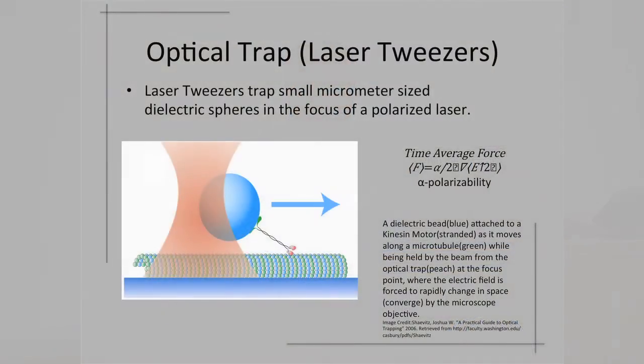So what is an optical trap? Optical traps or laser tweezers trap small micrometer-sized dielectric spheres in the focus of a polarized laser. I know that's a mouthful, and for everyone here I put an equation because I know most people love physics. So what this really means is most plastics are materials known as dielectrics, and when you put a dielectric in an electric field it will feel a force. If you have one that varies rapidly in space it will feel a force towards the area where it varies most in space. Electric fields, laser beams and light in general can be characterized as a large electric field. So all you have to do is focus a laser beam and you have your electric field that varies greatly in space. Therefore the bead or the dielectric will get pulled towards the focus of the laser beam.